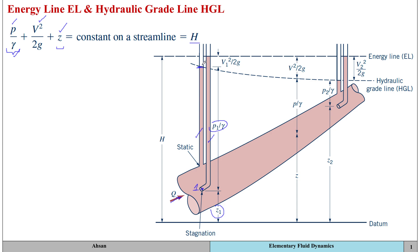The static pressure tap does not include the velocity head — you're only measuring the sum of pressure head and elevation head, which is known as the piezometric head. When you look at the pitot-static tube, it gives you the stagnation point, which provides a measurement of the total head or total energy of the flow, including the effects of the velocity head as well.